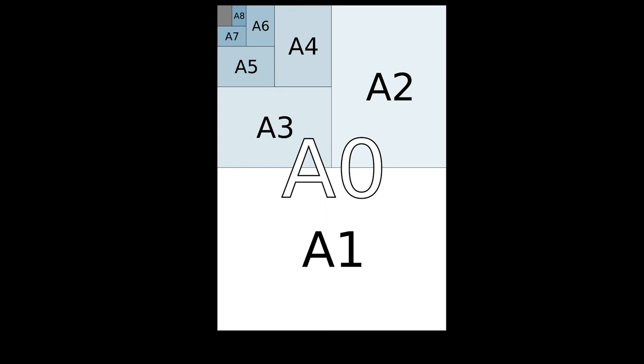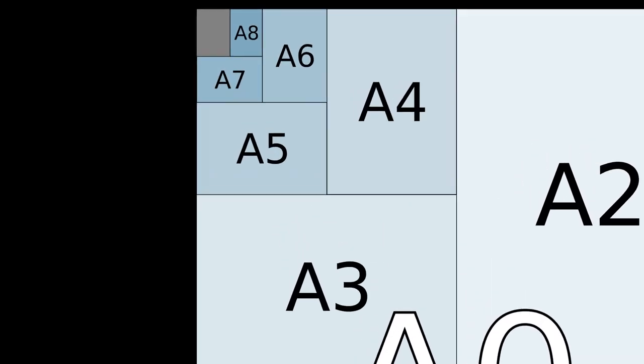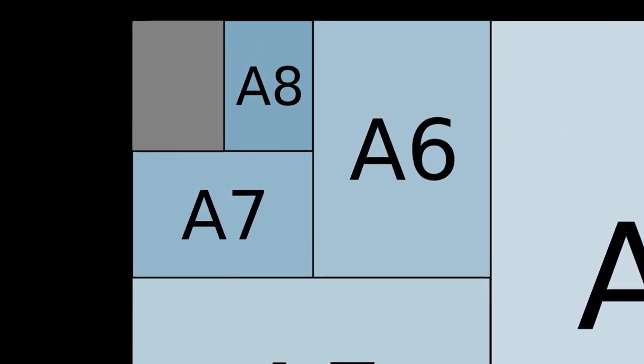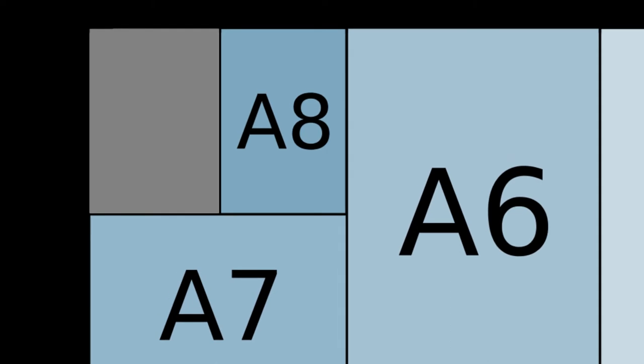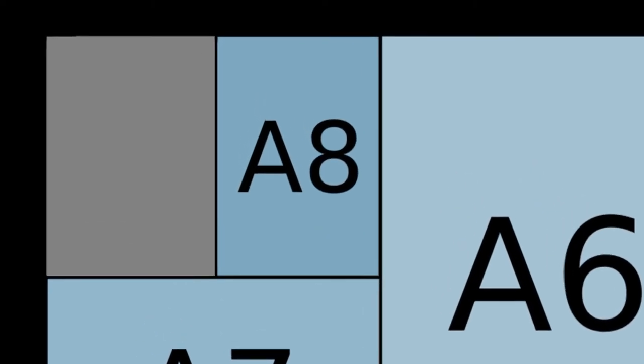So you get the next size, A1, by folding an A0 sheet in half, which means you also get exactly half the area. If you keep folding or cutting this sheet in half, with every fold, you will get the next size of paper.